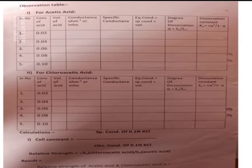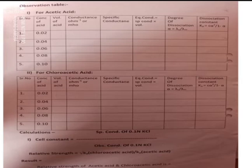Measure conductance for the second, third, fourth, and fifth solutions and so on. From this, you have to calculate specific conductance. You already know all the formulas to calculate: specific conductance, equivalent conductance, degree of dissociation, and dissociation constant.